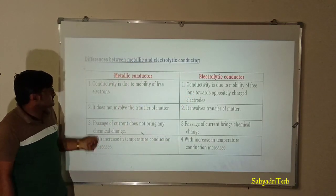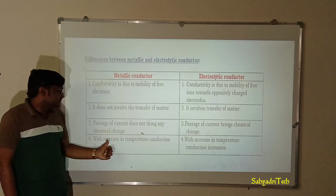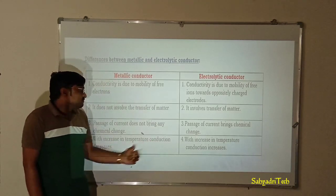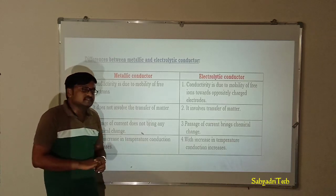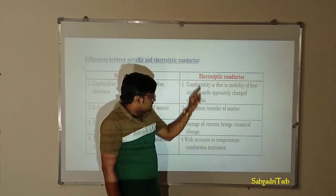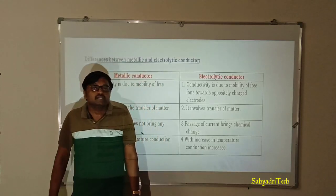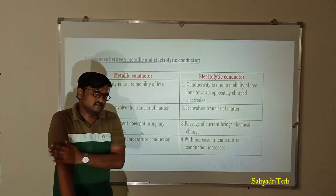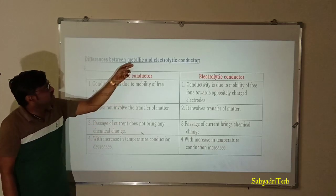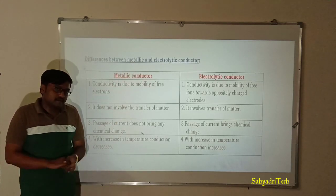The fourth point of difference: in the case of metallic conductors, with increasing temperature, metallic conduction decreases. While in the case of electrolytic conductors, with increasing temperature, conduction increases. These are the four points of difference between metallic and electrolytic conductors.